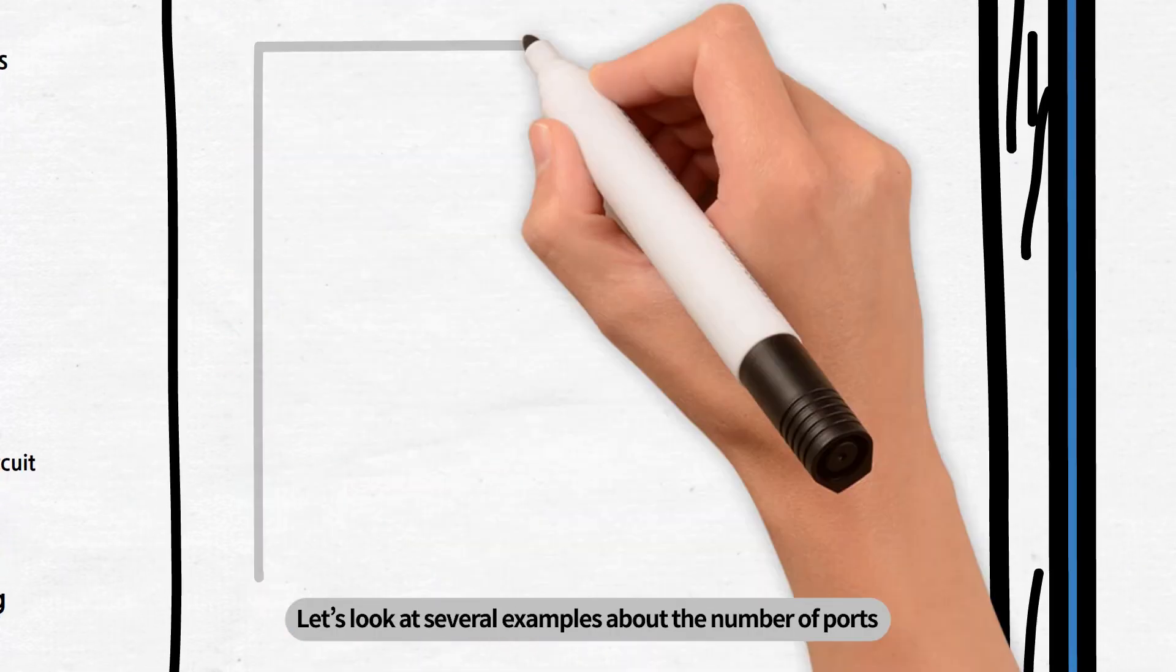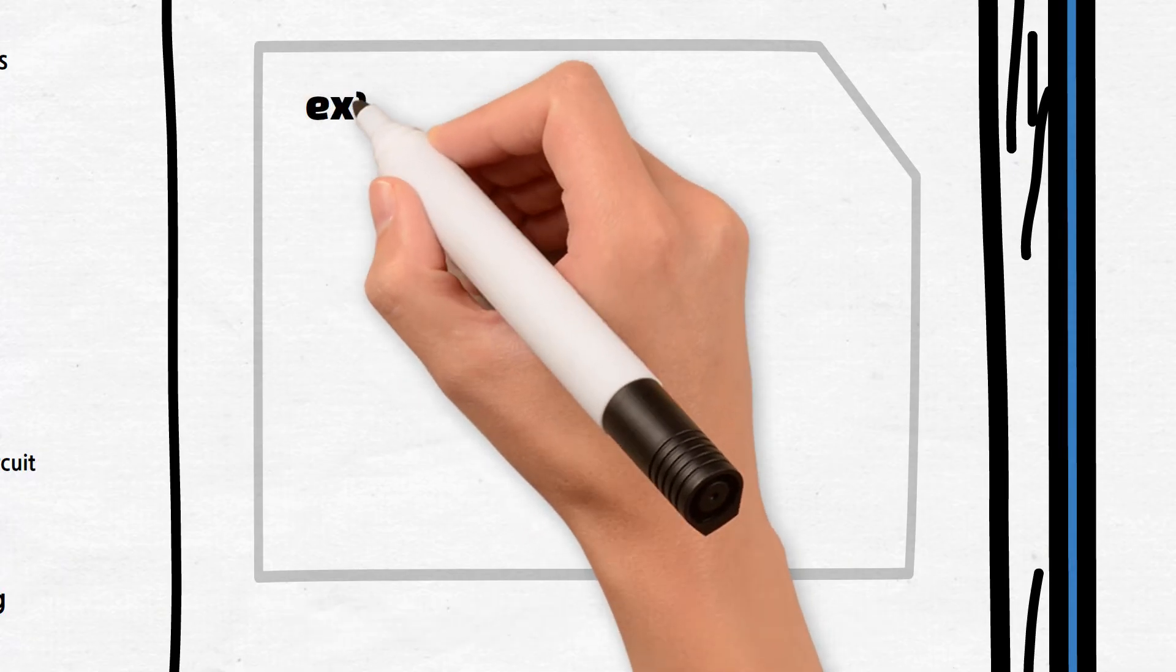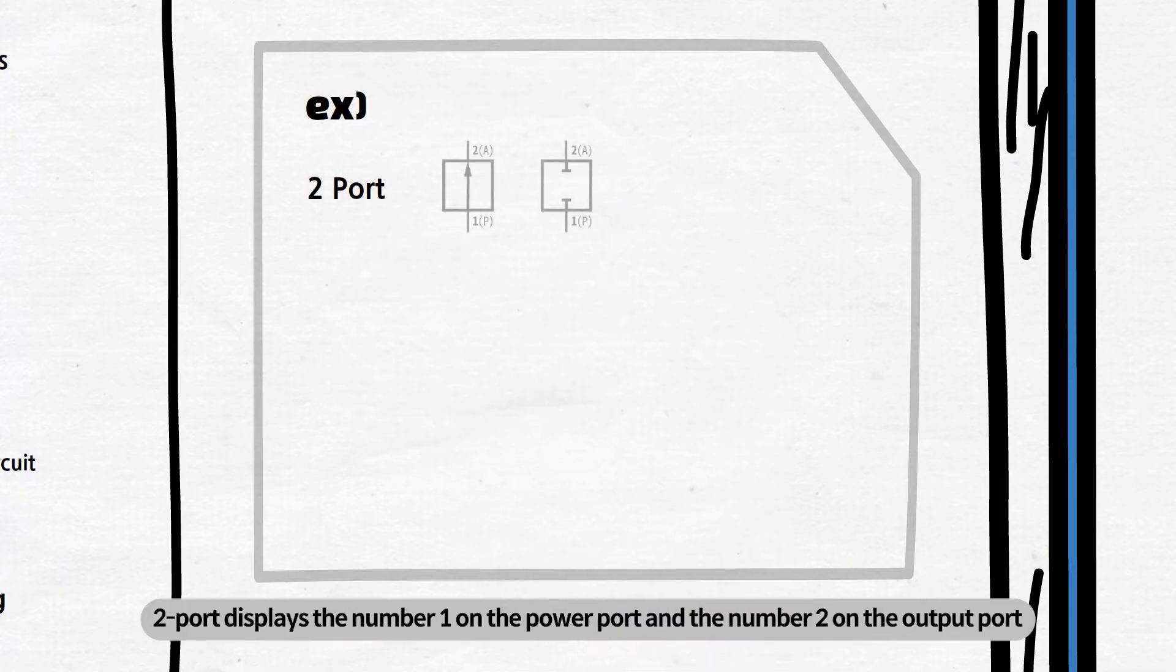Let's look at several examples about the number of ports. 2-port displays the number 1 on the power port and the number 2 on the output port.